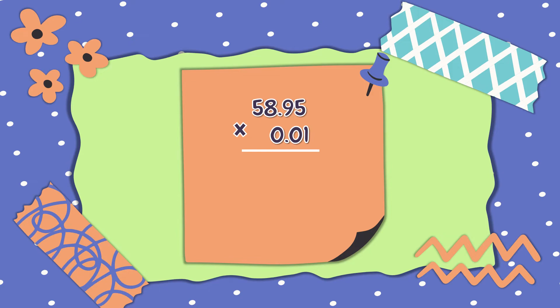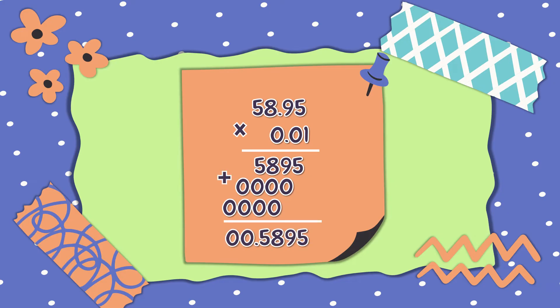Write the numbers in column and start multiplying from right going to the left. So 58 and 95 hundredths times 1, the answer is 5,895. Then, 58 and 95 hundredths times 0 is 0, and again times 0 is 0. 5,895 — almost the same, right? Again, don't forget to count all the decimal numbers to the right of the decimal point.